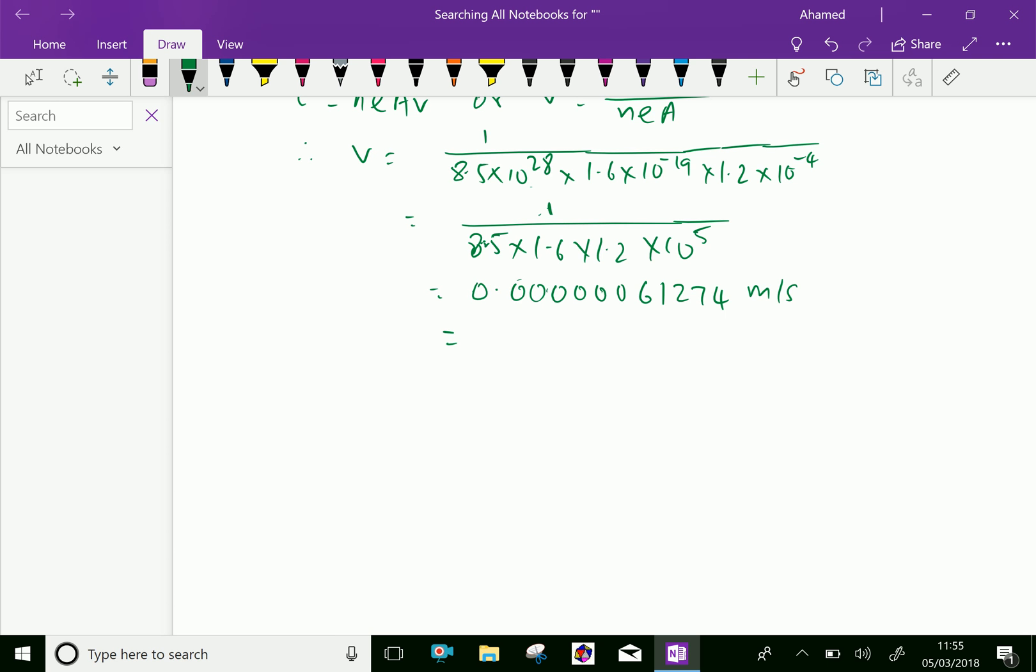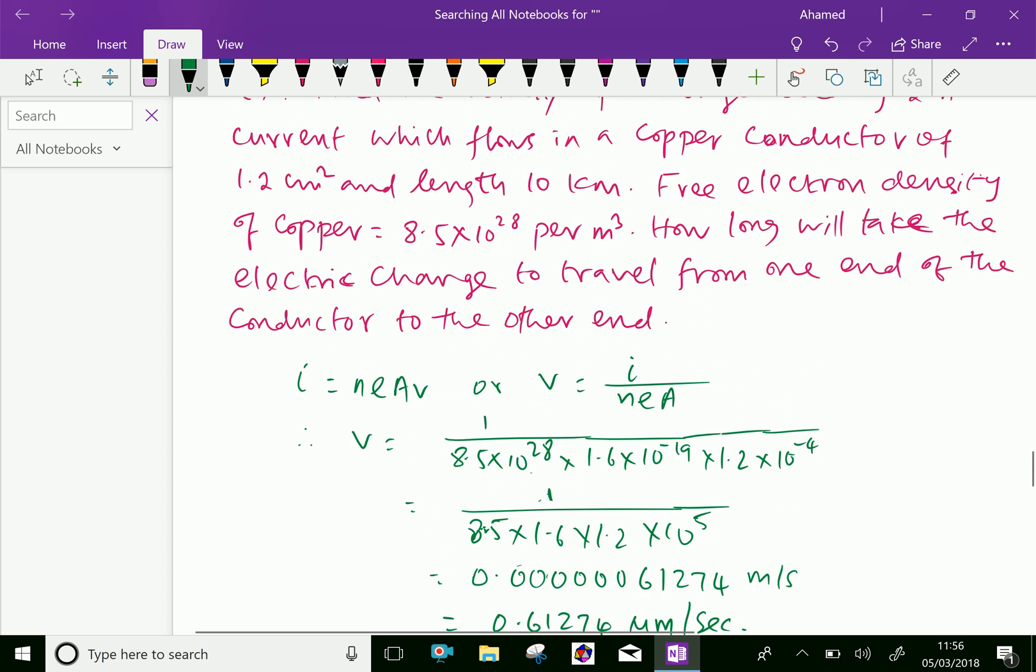That is 0.61274 micrometer per second. Now, time taken by the charge to travel the conductor for 10 kilometers.